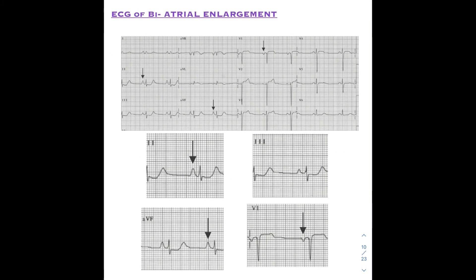Here is a 12-lead ECG showing biatrial enlargement. In lead 2, the height of the P wave is more than 2.5 mm and the duration is also more than 2.5 mm, indicating a combination of left and right atrial enlargement. In lead aVF, the height is again more than 2.5 mm and the duration is more than 2.5 mm.